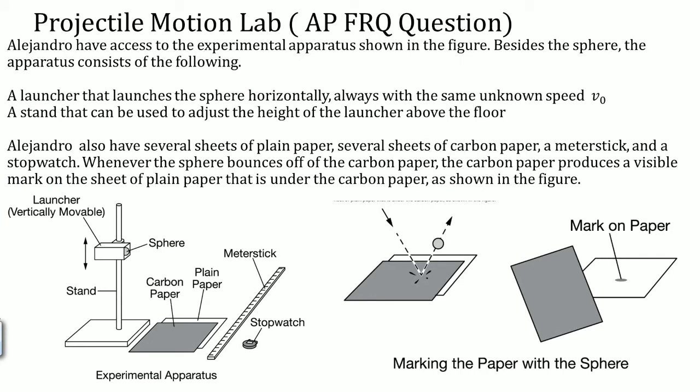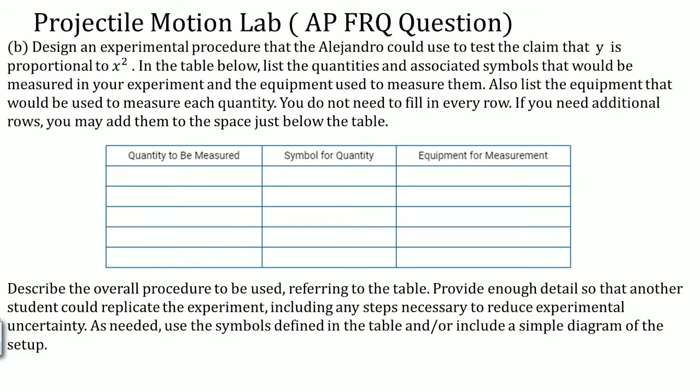The second part of the lab sets up the scenario saying Alejandro has all this equipment as well as a sheet of carbon paper. The way carbon paper works is that if you put carbon paper on top of white plain paper and an object touches it, it's going to leave a mark on it.